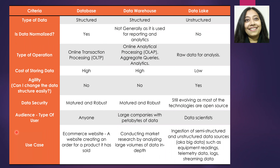So in this slide, I have taken a couple of criteria. For each of these criteria, we will see how a database behaves, how a data warehouse behaves, and how a data lake behaves. The first criteria is the type of data. Most of you have worked with databases and understand that the type of data stored in a database is structured data.